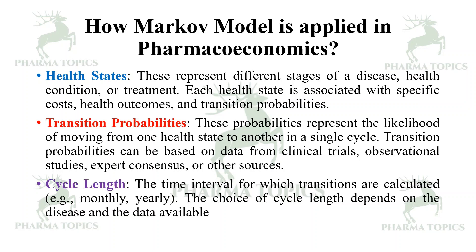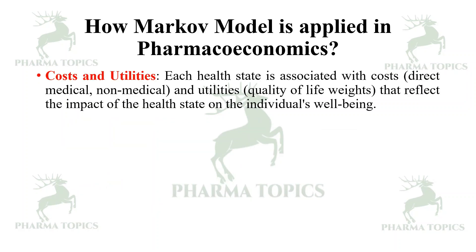Cycle length is the time interval for which transitions are calculated, for example monthly or yearly; the choice depends on the disease and available data. Each health state is associated with a particular cost — including direct medical and non-medical costs — and utilities, which are quality-of-life weights that reflect the impact of the health state on the individual's well-being.